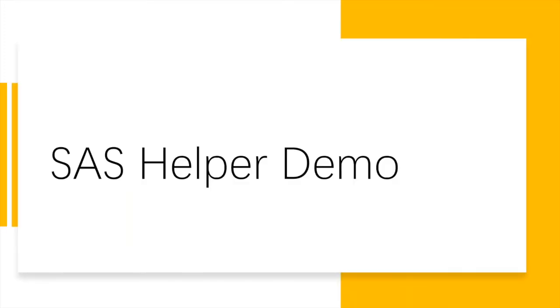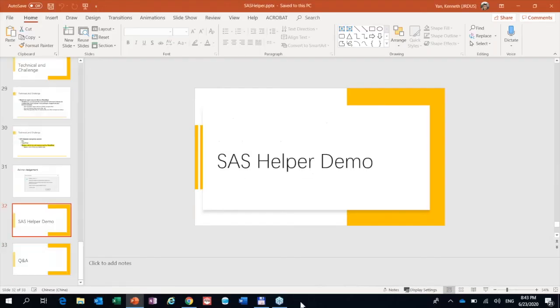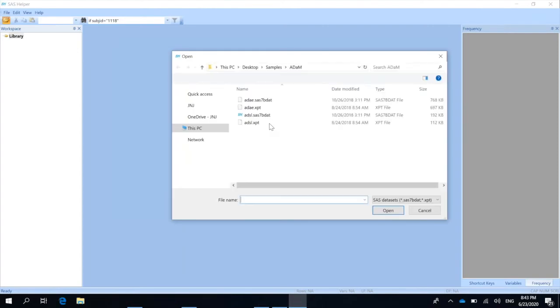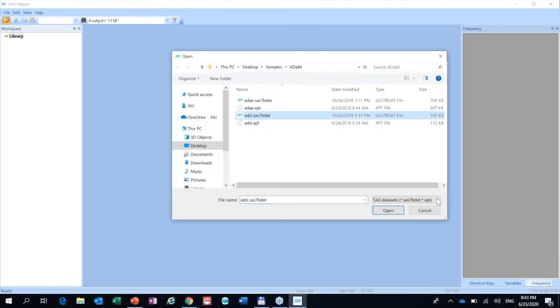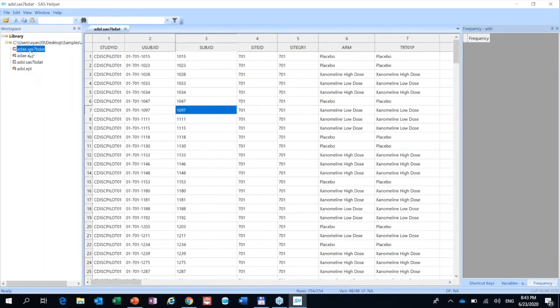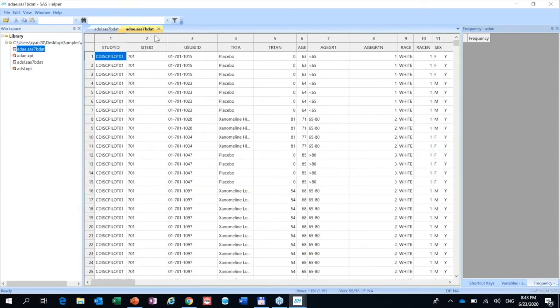Then I will do a quick demo. Let me open SAS Helper. Let's open the first dataset here, ADSL. Open it. At the left side, you can see the workspace. When you open one dataset, the folder is added here. Then from here, you can also quickly open another dataset such as ADAE.